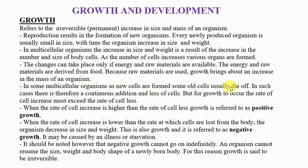In some multicellular organisms, as new cells are formed, some old cells usually die off. For example, cells of the skin are continuously replaced — they are formed and they are replaced. In such cases, there is a continuous addition and loss of cells. But for growth to occur, the rate of cell increase must exceed the rate of cell loss or the rate of cell death. Cells may increase but also die; for net growth to occur, the number of new cells produced must be greater than the number of cells dying.